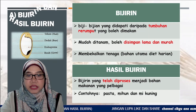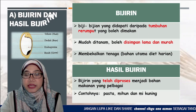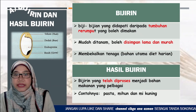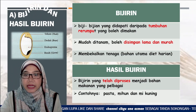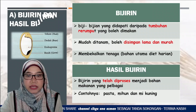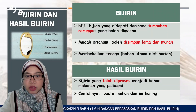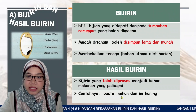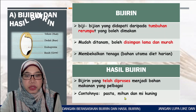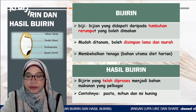Apakah itu hasil bijirin? Hasil bijirin ialah bijirin yang telah diproses menjadi bahan makanan yang berbagai, seperti tepung dan sebagainya. Daripada hasil tepung, kita boleh menghasilkan pasta, bihun dan mie kuning. Itu adalah hasil bijirin.